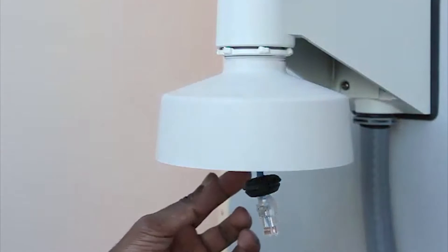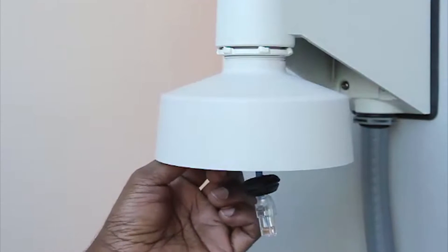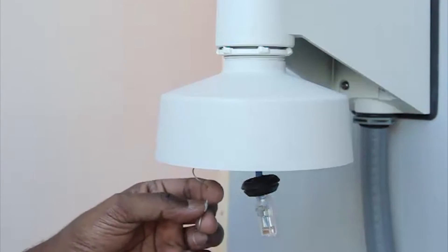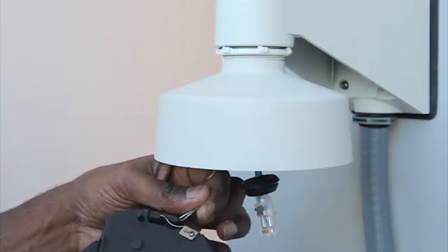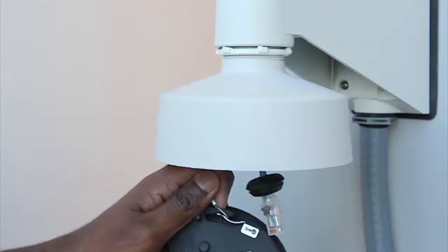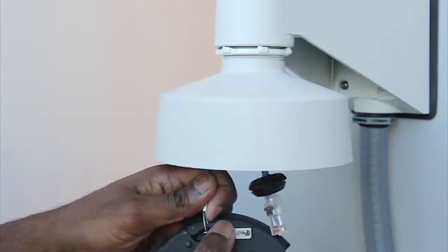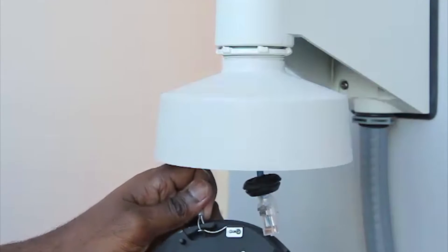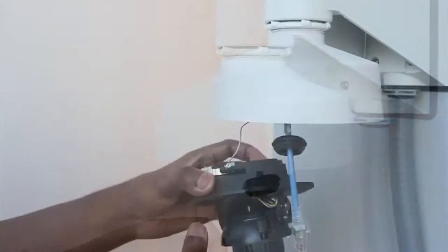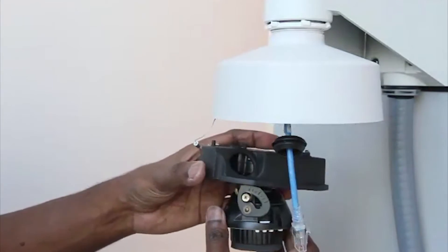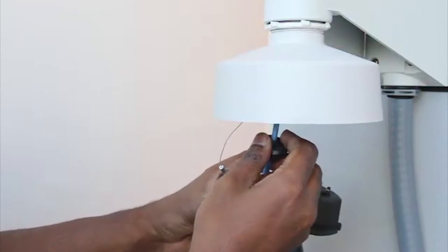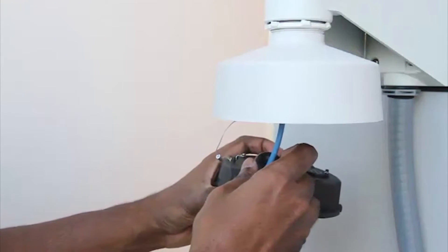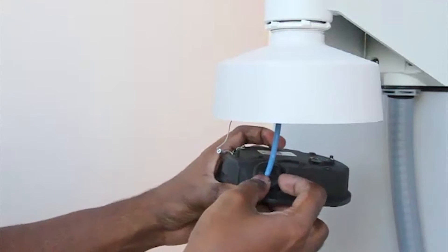After you install the mounting adapter, the next step is to mount the camera base to the adapter. Attach the lanyard on the mounting adapter to the anchor on the camera base. Next, pull the required ethernet cable through the cable entry hole on the camera base. Connect the cable to the ethernet port. The link LED will turn on once a network link has been established.